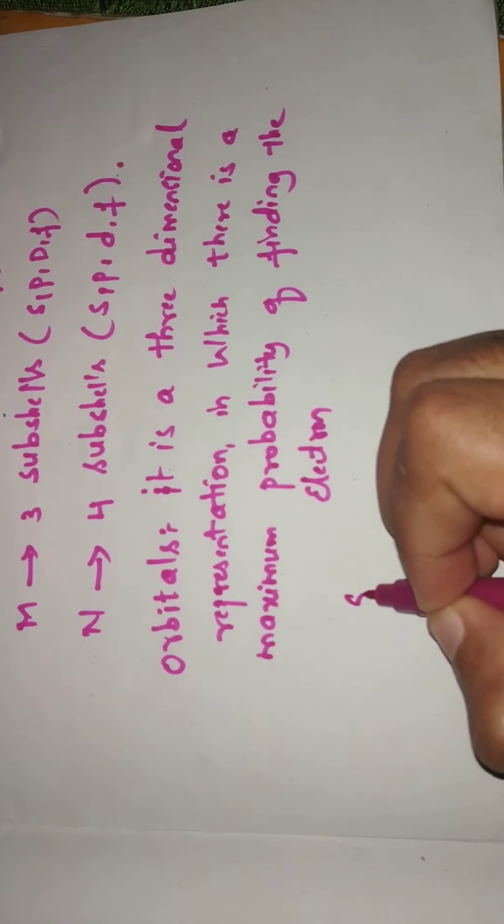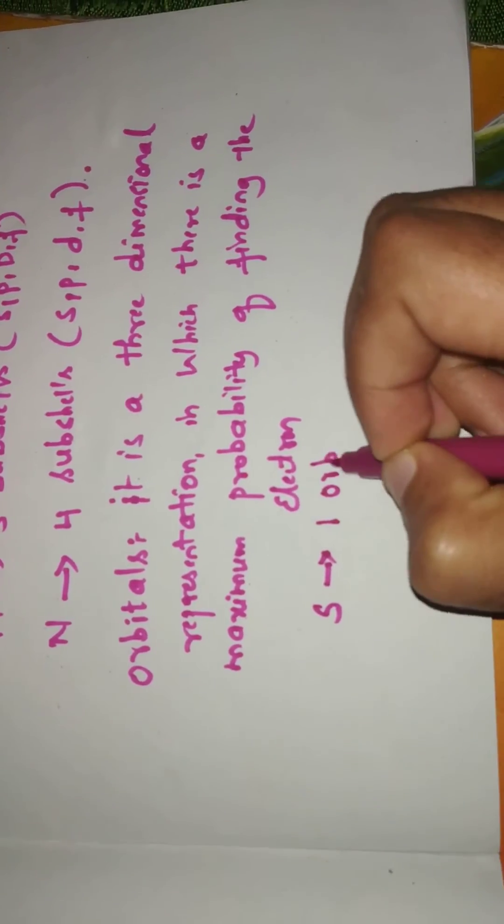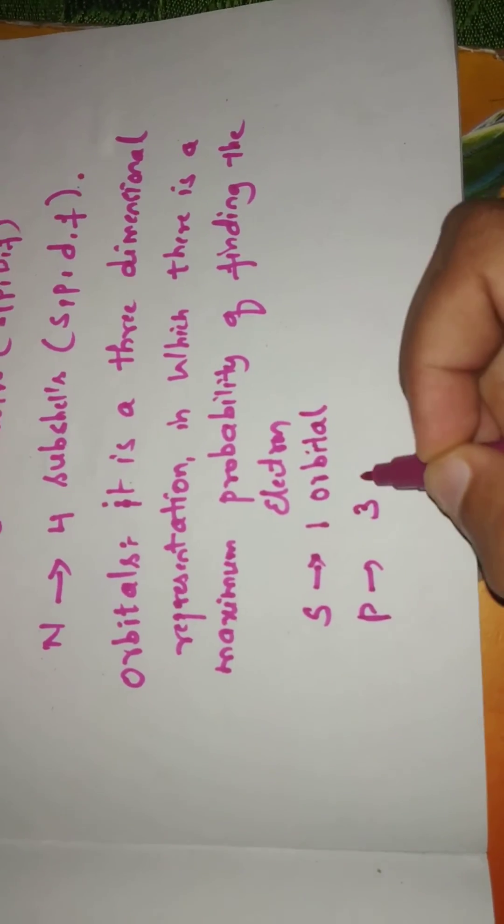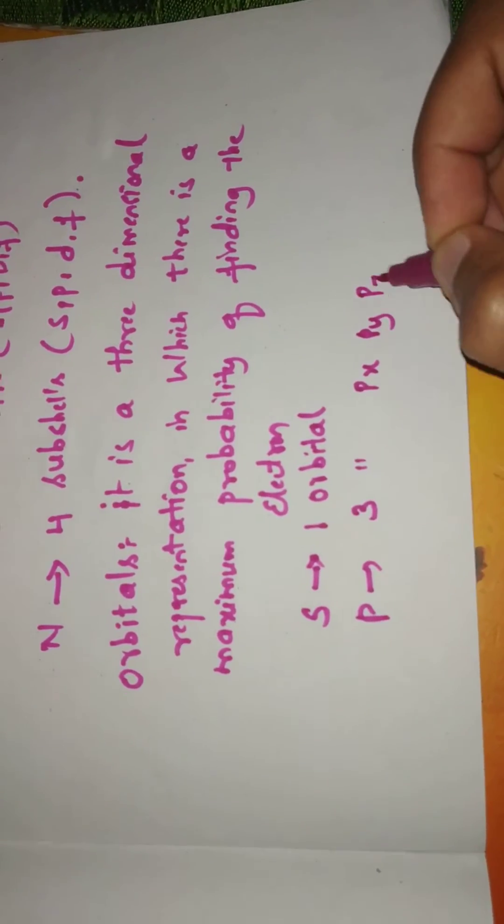Likewise, S subshell has only one orbital. P has three orbitals: Px, Py, and Pz.